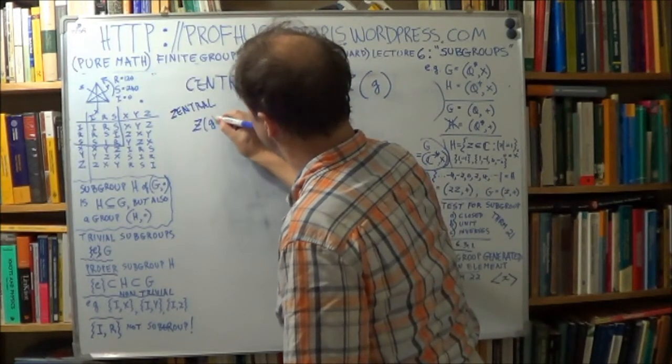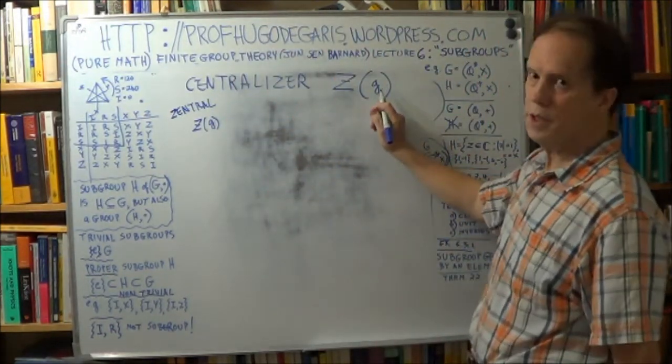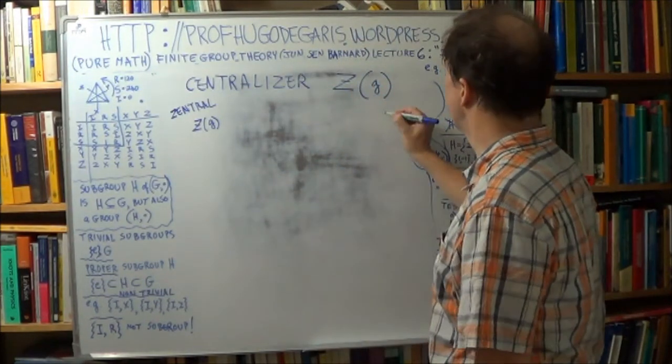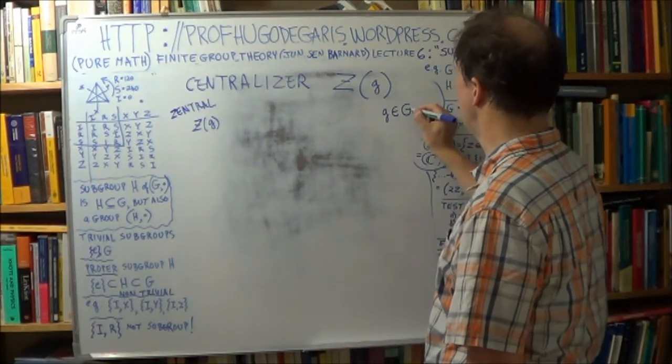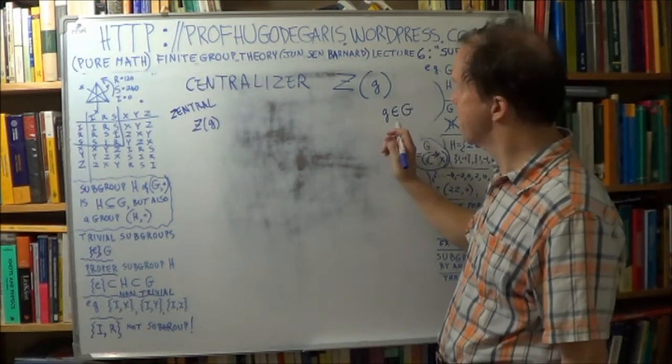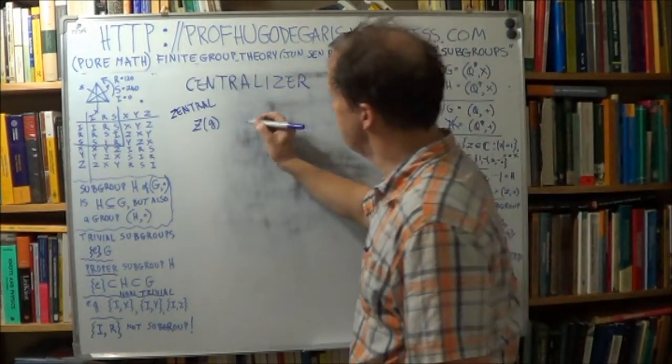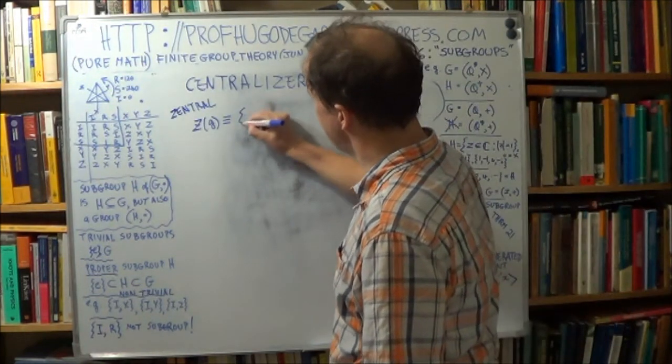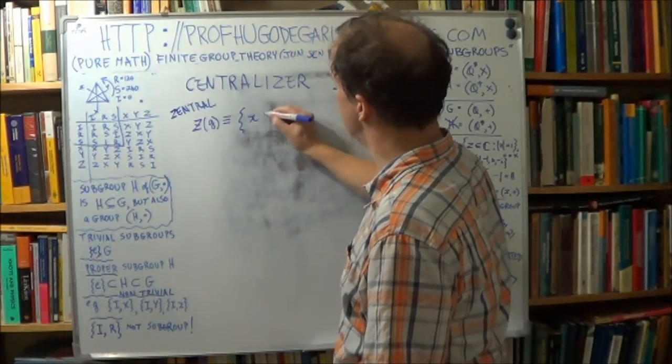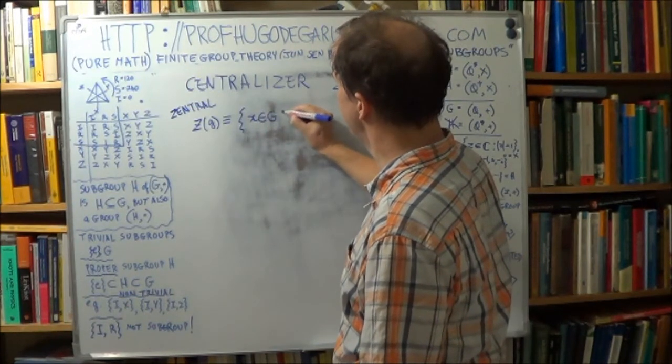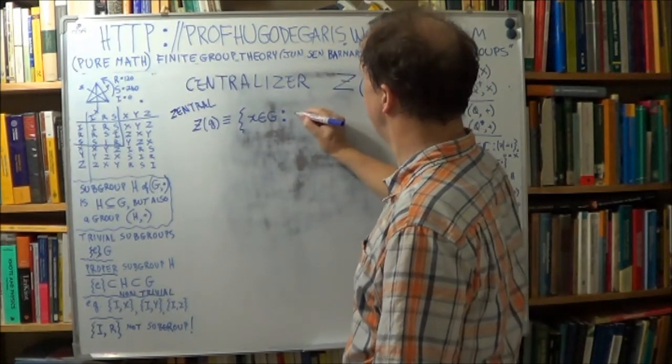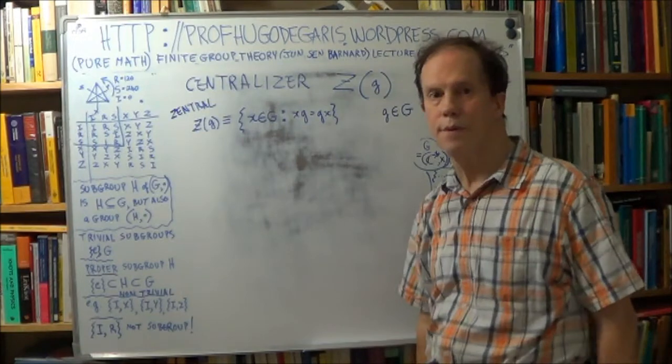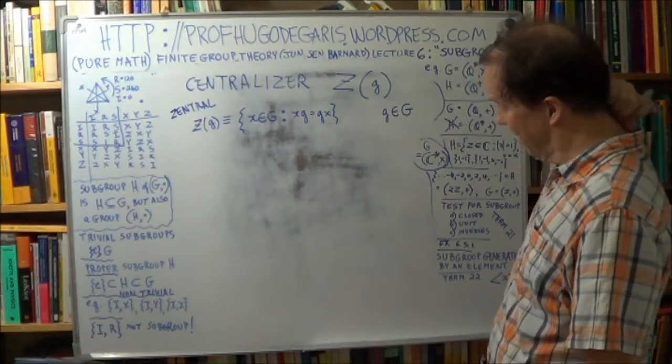Z of g. What's little g here is just an arbitrary member of a group. Little g is just any old member of a group. Z of g, by definition, so I put three bars there, by definition, is the set of elements x belonging to G such that xg equals gx. That's all it is.